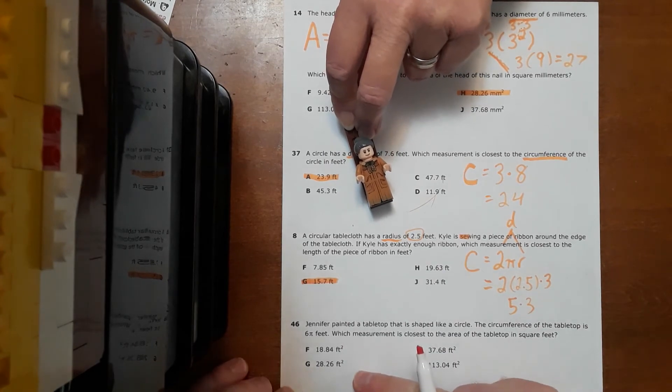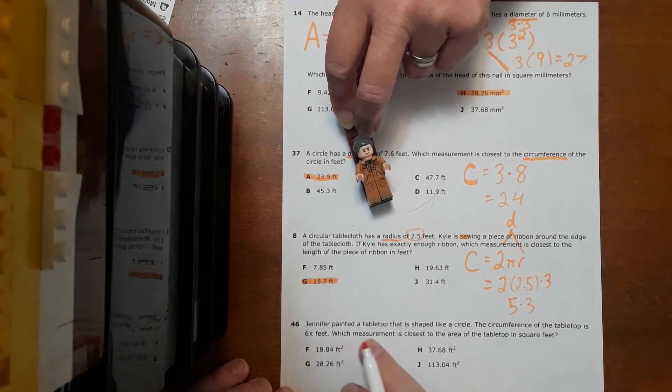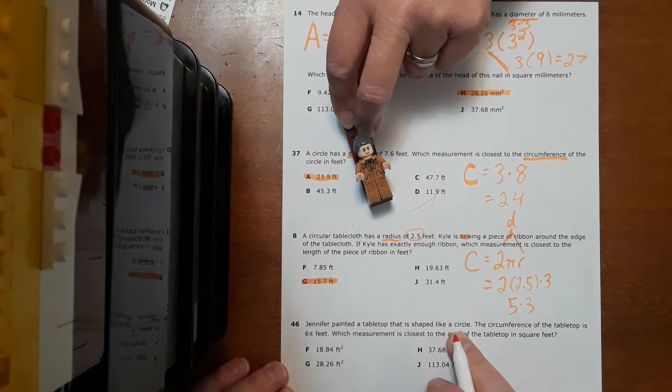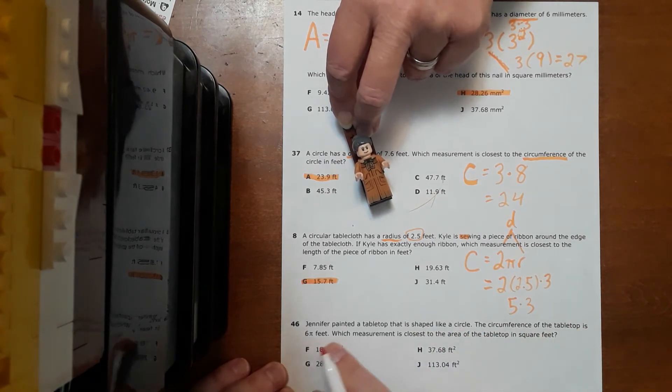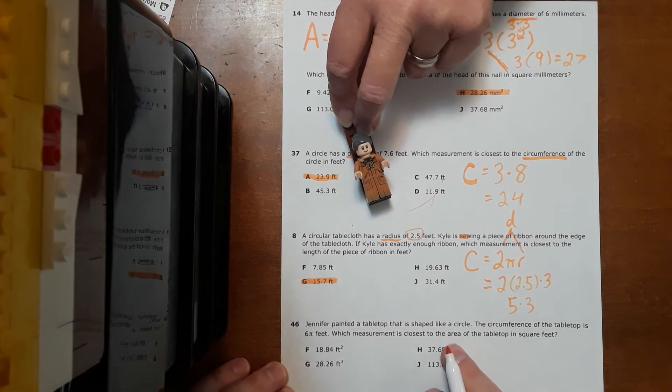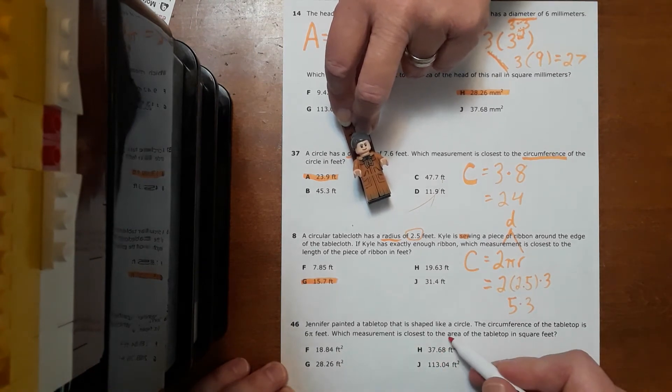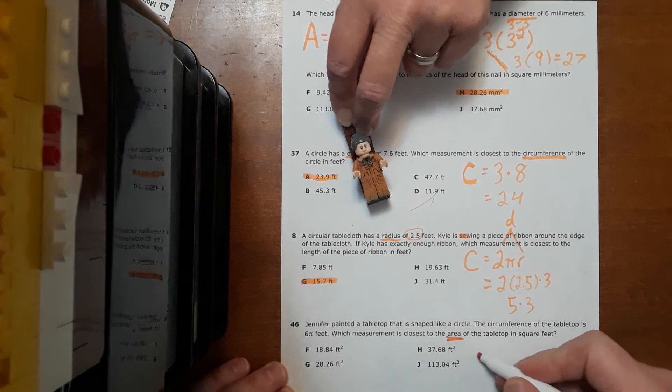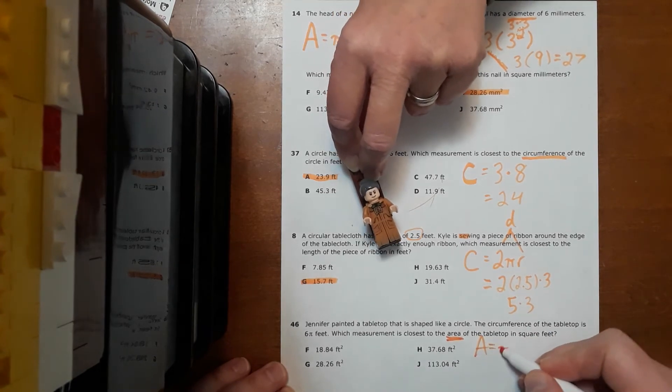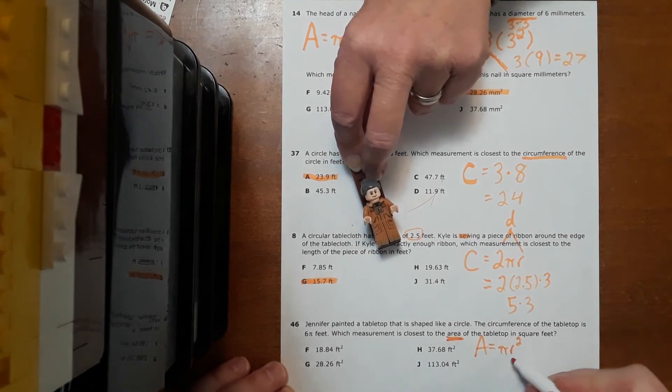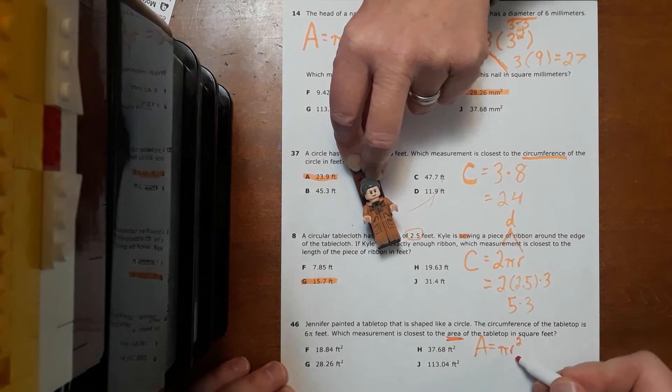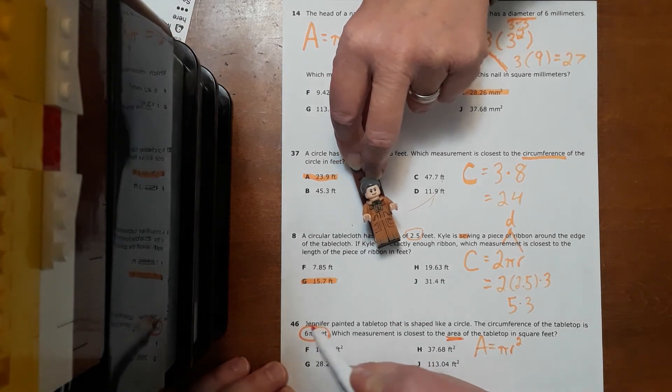Okay. Now, this last problem here is the trickiest. Jennifer painted a tabletop that is shaped like a circle. The circumference of the tabletop is 6 pi feet. Which measurement is closest to the area of the tabletop in square feet? Well, they tell us to find the area, which shouldn't be a problem. We've got a formula for it. But they don't give us what we need. We need r, the radius. We don't have r. We have the circumference.